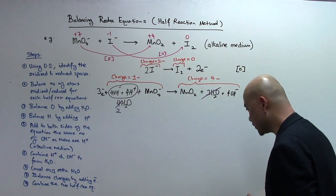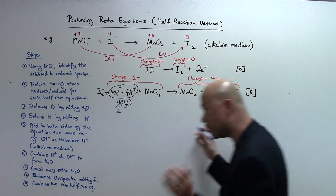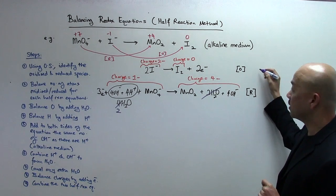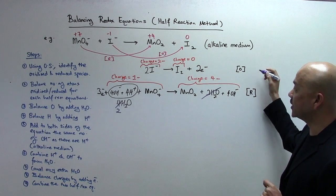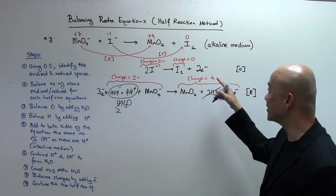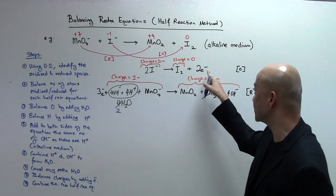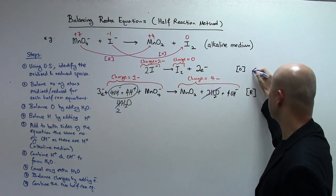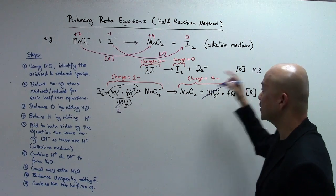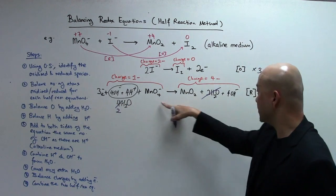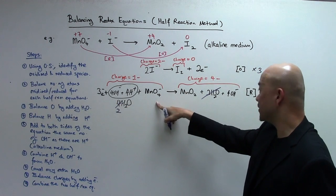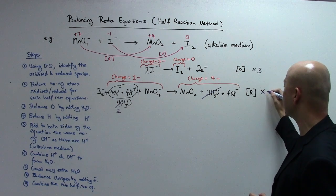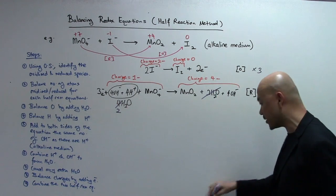Now we combine the two half equations by eliminating the electrons. The oxidation half equation has 2 electrons, so we multiply it by 3. The reduction half equation has 3 electrons, so we multiply it by 2. Then we add them together.